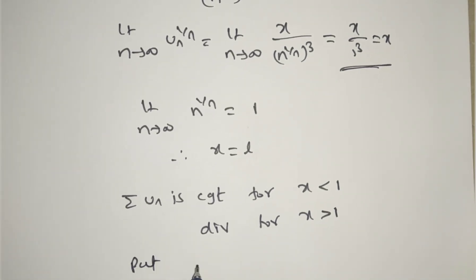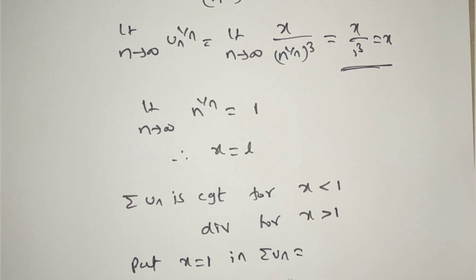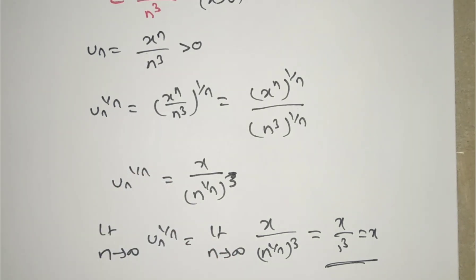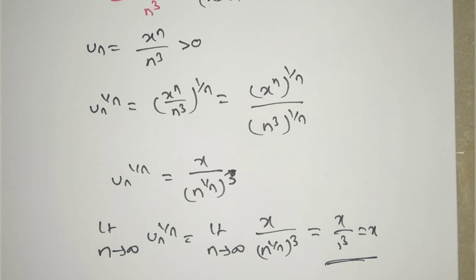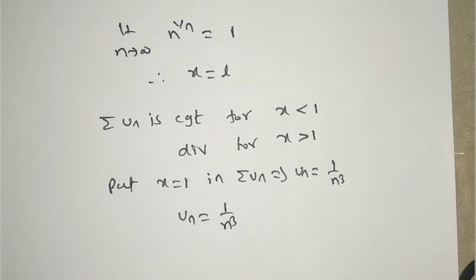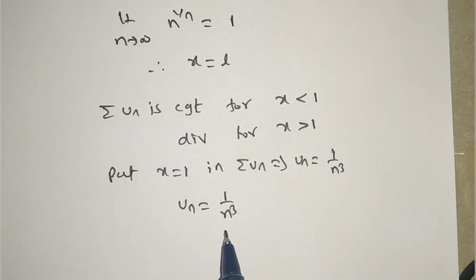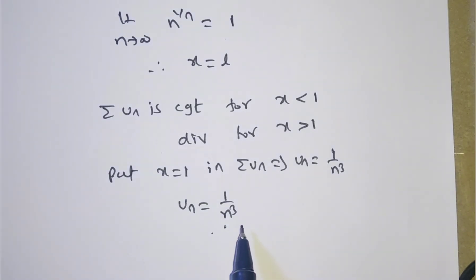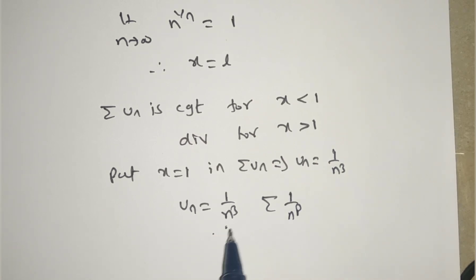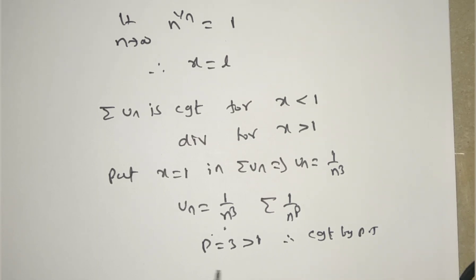If x = 1, substitute into uₙ: uₙ = 1ⁿ/n³ = 1/n³. This is in the form Σ1/nᵖ with p = 3 > 1. If we apply the nth root test here, the limit goes to 1, so the nth root test fails. Therefore, by the p-test, since p = 3 > 1, the series is convergent.